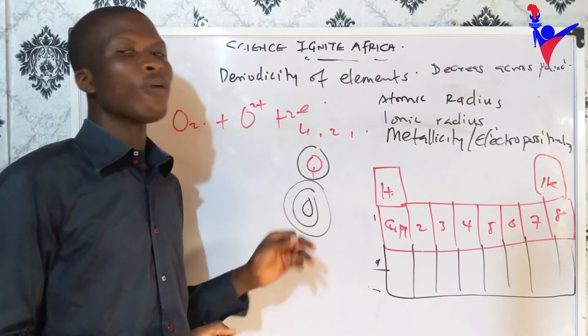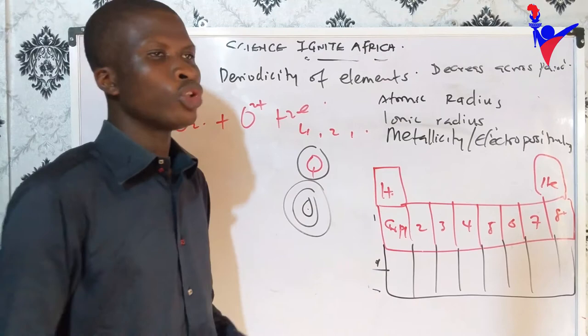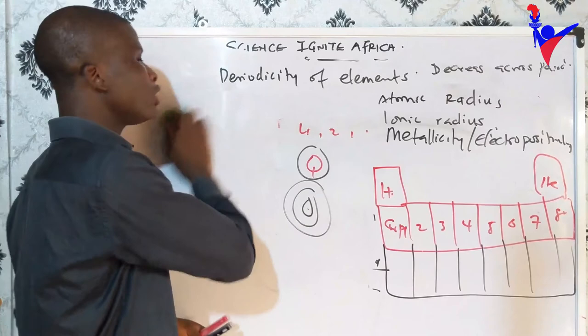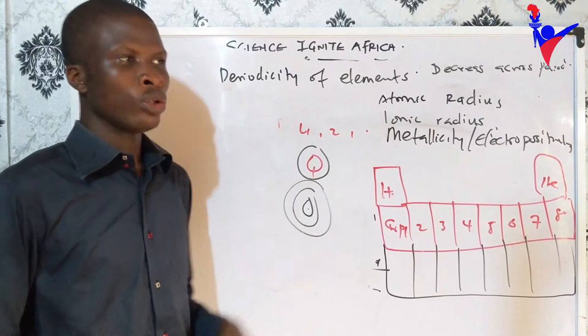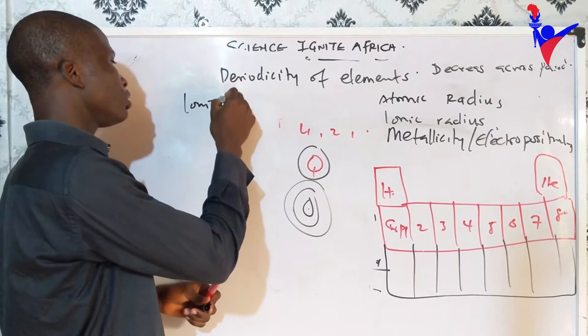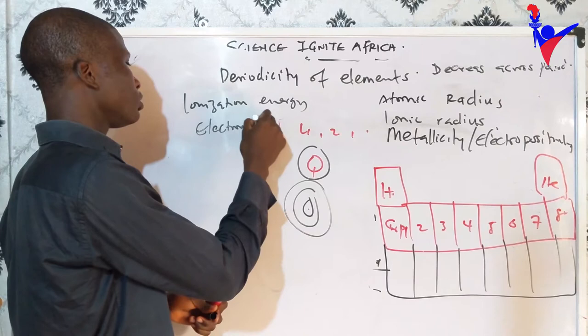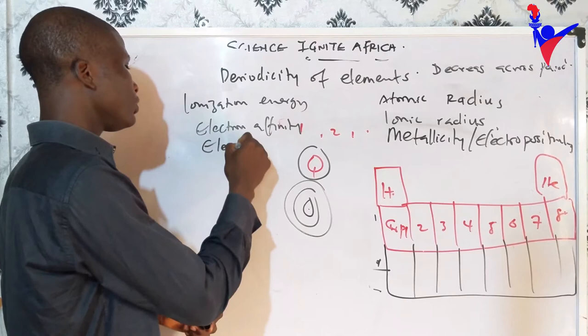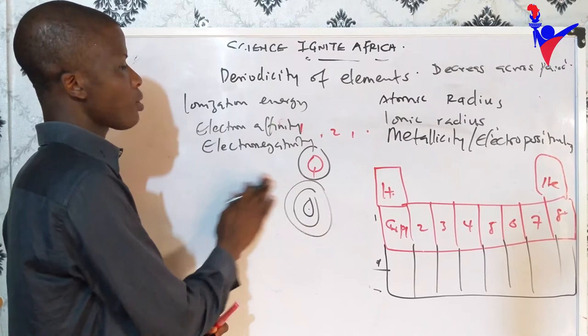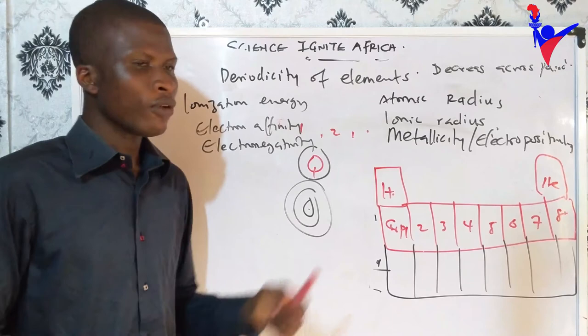Ionization energy is the amount of energy needed to remove an electron from an element in its neutral state to give an ion. So ionization energy, electron affinity, and electronegativity all increase across the period. When they increase across the period, they decrease down the group — this is an important rule to remember.